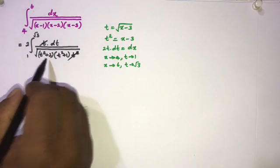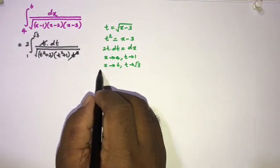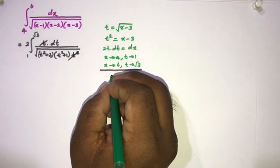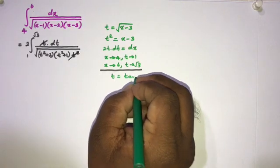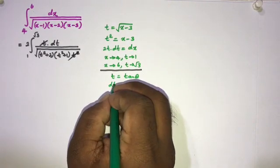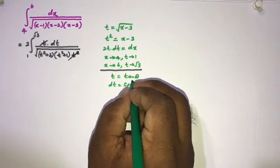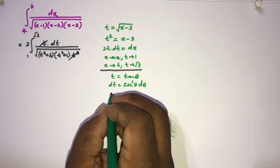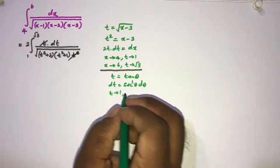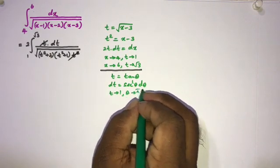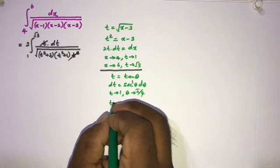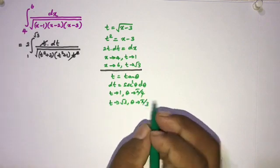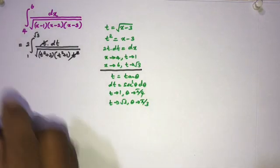For this remaining integral I am going to take another substitution. Let t equal tan(θ), so dt equals sec²(θ) dθ. Changing the limits: when t equals 1, θ equals π/4; when t equals √3, θ equals π/3.